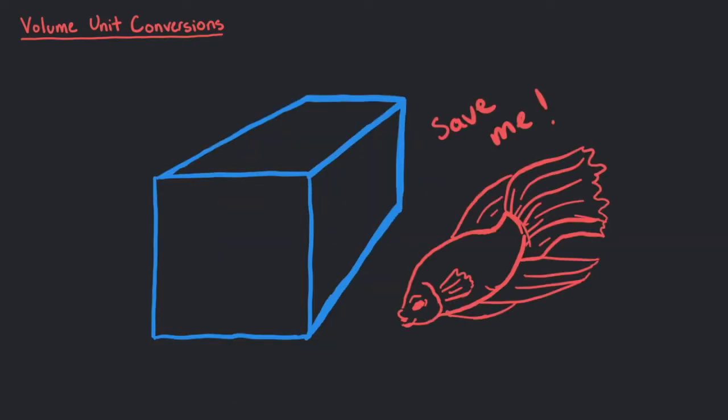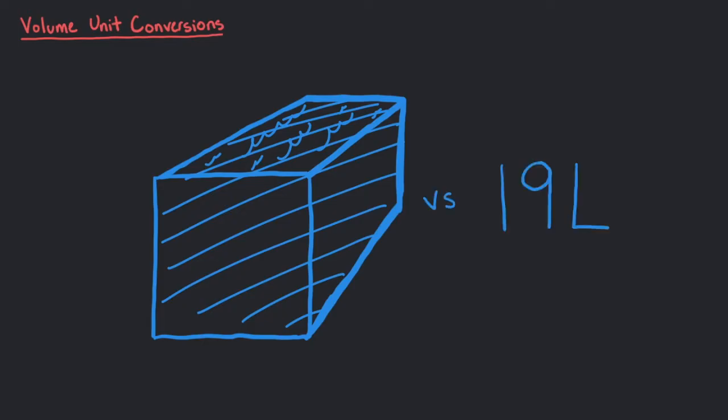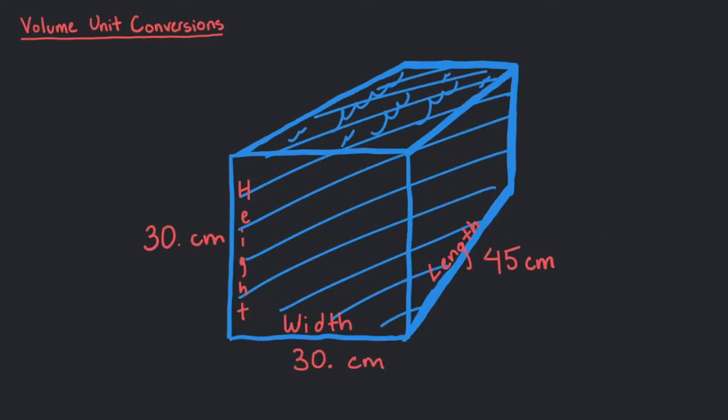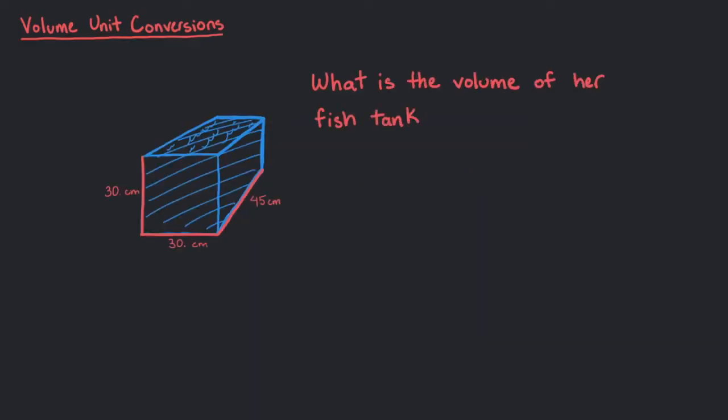We want to compare the amount of water inside the fish tank to 19 liters. So let's have a look at this fish tank. To find the amount of space the water takes up in the tank, we have to multiply the length, width, and height together. What is the volume of her fish tank in cubic centimeters?